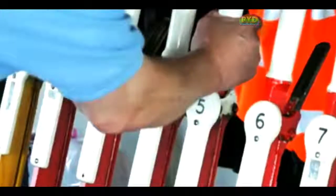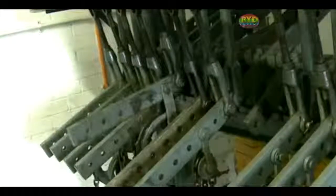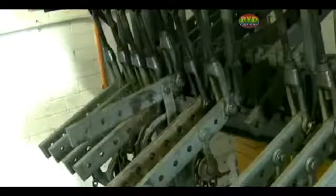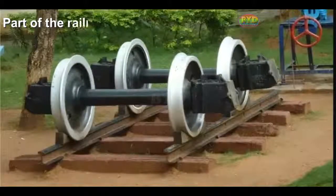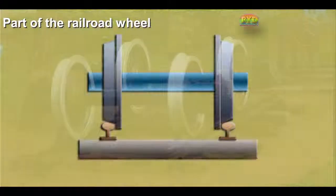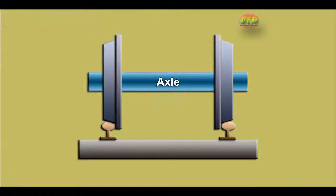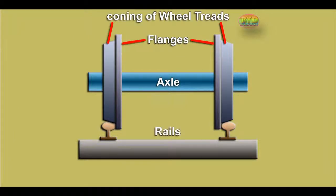Train wheels have a flange design that helps to keep them firmly connected to the rails at all times — on straight tracks as well as on curves. This shape can be seen clearly in this photo.